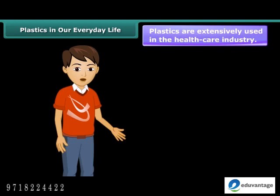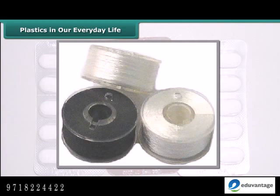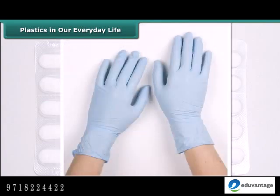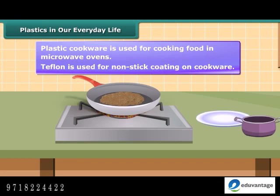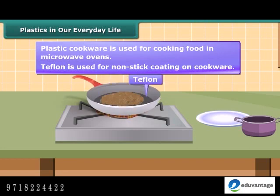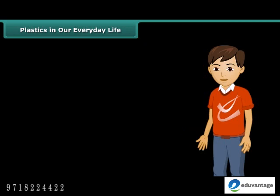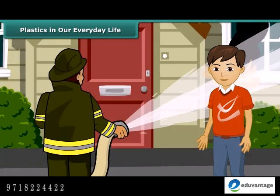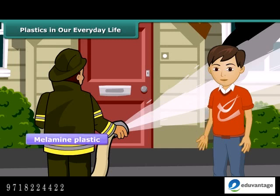Plastics are extensively used in the healthcare industry for packaging of tablets, as threads used for stitching wounds, syringes, doctor's gloves and a number of medical instruments. Have you ever noticed the frying pan for cooking dosa? You would have seen a black coating on it — it is teflon, which is a special plastic on which oil and water do not stick, used as non-stick coating on cookware. The uniforms of firemen have a coating of melamine plastic to make them flame resistant.